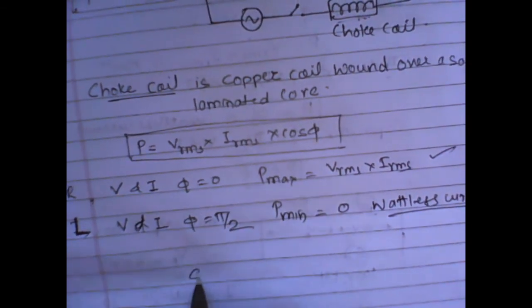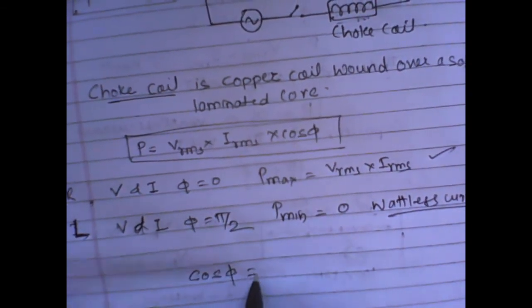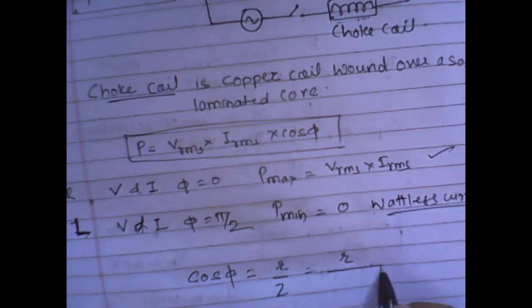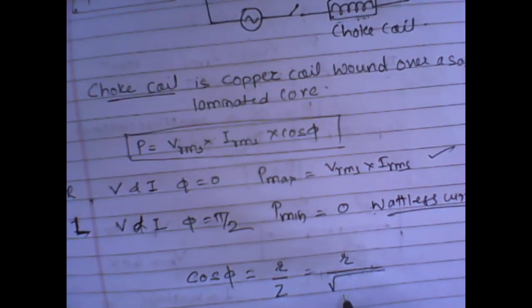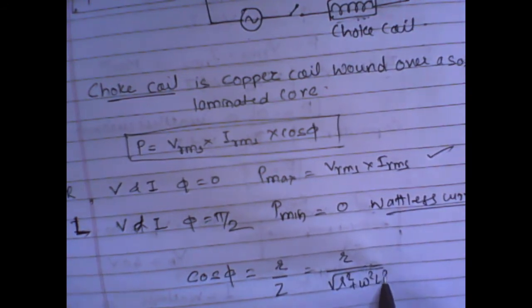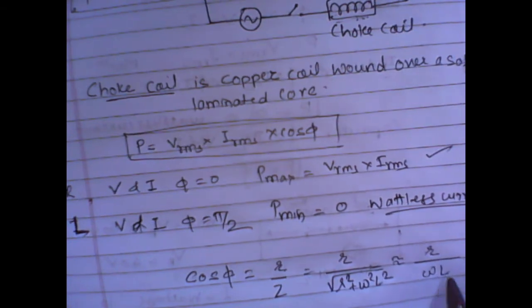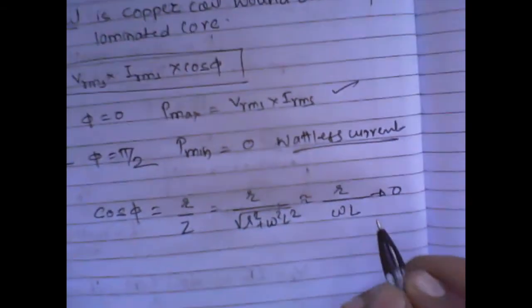The value of cos φ is given as R upon Z, that is R upon √(R² + ω²L²), which approximately can be written as R upon ωL, and which is tending to equal to zero.